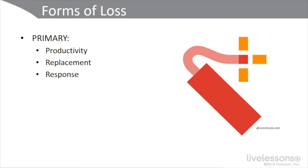Primary loss is basically primary stakeholder loss — something that happens to the organization, the company, the enterprise, affecting the company's stakeholders as a direct result of an event or an incident. The three main forms are productivity, which could be producing your product or delivering your service, whatever your value proposition is; then replacement — replacement of data, replacement of facilities and equipment; and the cost of response.